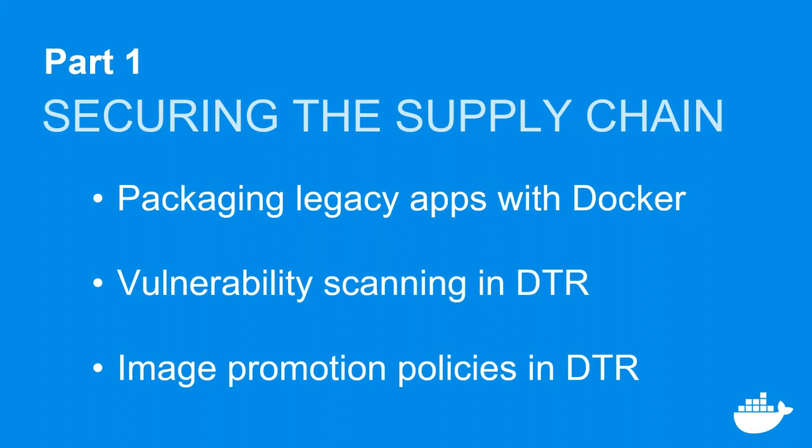The second part I'll cover in DTR is image promotion. Lots of enterprises have a software pipeline with dev, QA, test, and production stages. You can automate all that and enforce policies to make sure that as you progress through the pipeline, you're meeting the quality gates you need to be confident in production. And it doesn't matter what type of application it is, because once it's packaged in Docker, all applications look the same. You can apply the same principles to your legacy Windows applications, new Windows applications, and Linux applications, all in the same instance of Docker Trusted Registry.